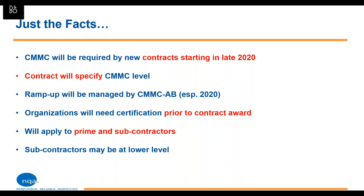The RFPs themselves or contract documents will specify which particular CMMC level is going to be needed for that contract, so it's not going to be a guessing game once you see the RFP. The AB is looking to manage the ramp-up through this year as they launch the program, particularly regarding training, getting the C3PAOs accredited, and getting it into contracts. That's going to flow through the CMMC AB this year, with the goal of getting a more open market in early 2021.